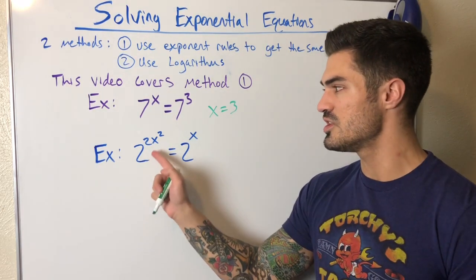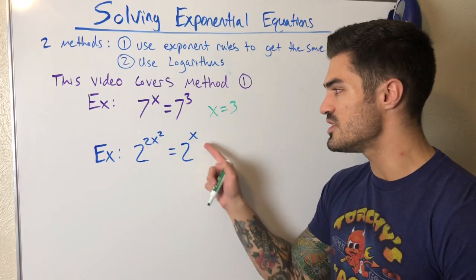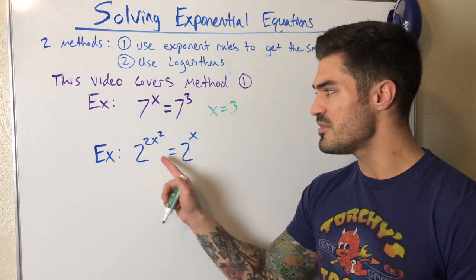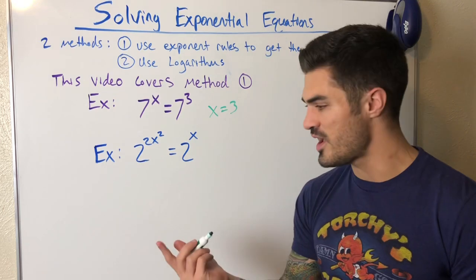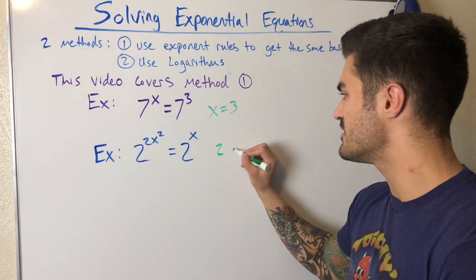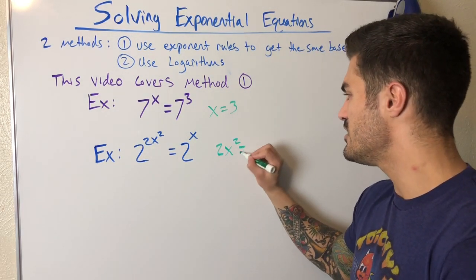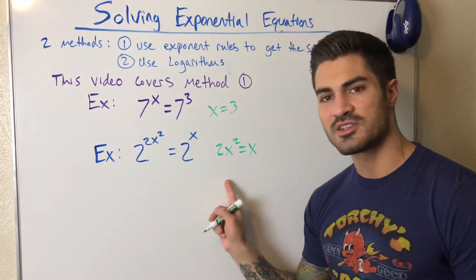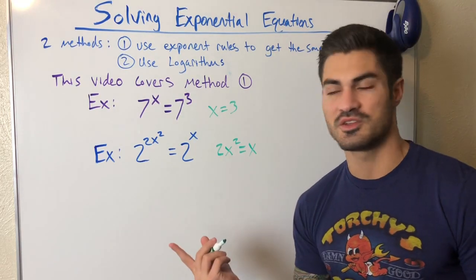If we have some number to some power equal to that same number to some power, then those powers must be equal. Look at this example. Two to the two x squared power equals two to the x. If this is true, then that means two x squared must equal x. And that's how we can solve for x.